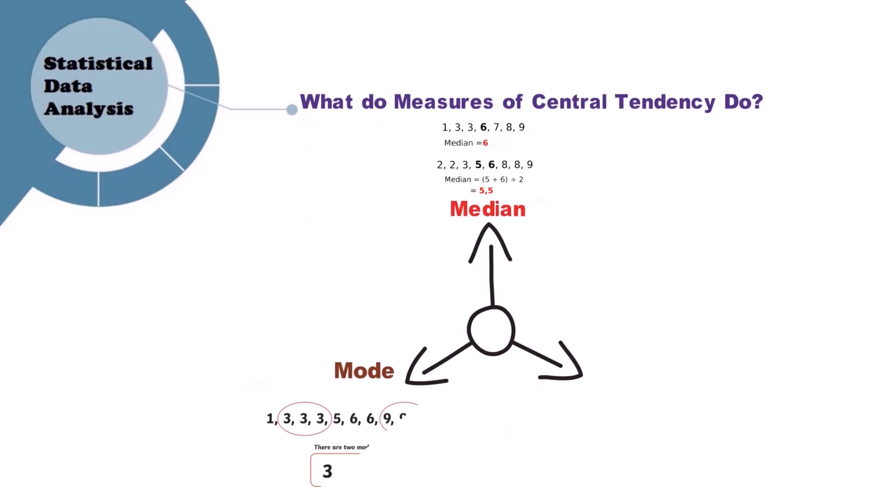Mode: Mode is the most wanted or popular response in the data set. Mean: you calculate the mean by simply adding all the values and dividing by the total number. Coming to how you can calculate the variability, which is equally important.